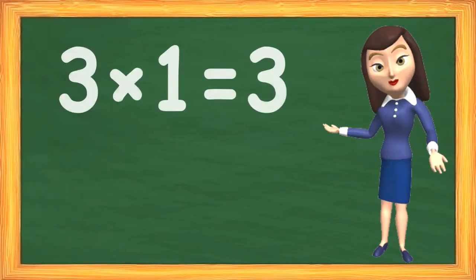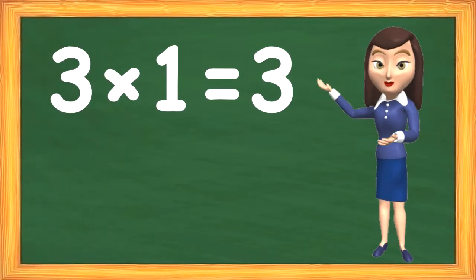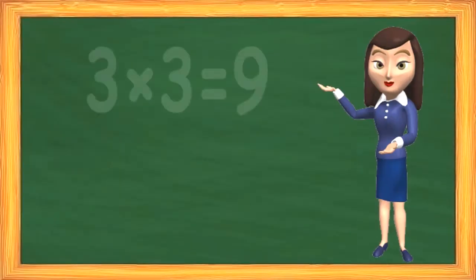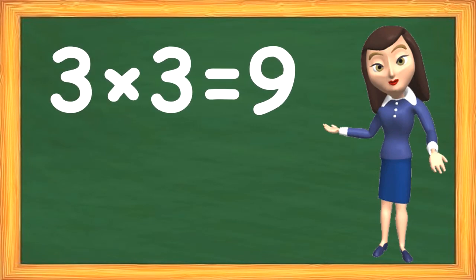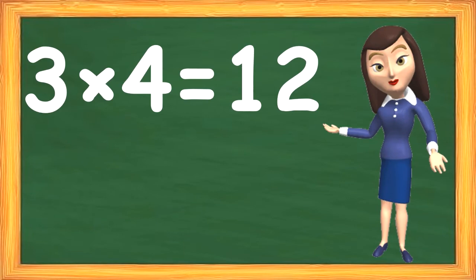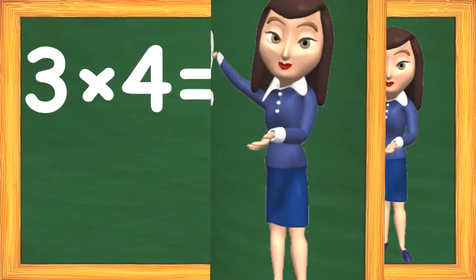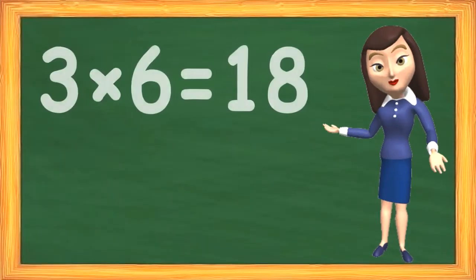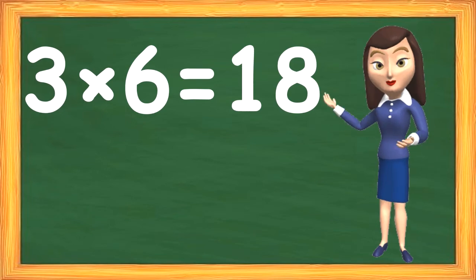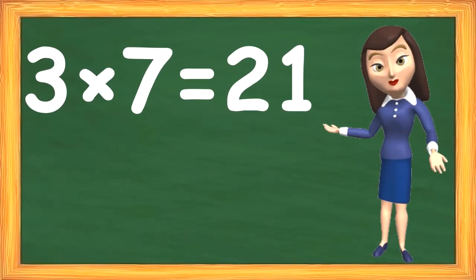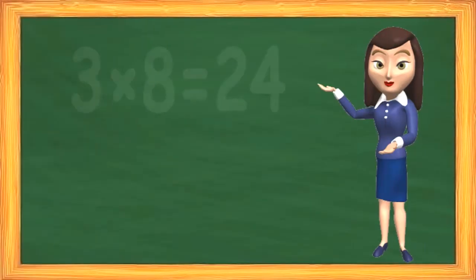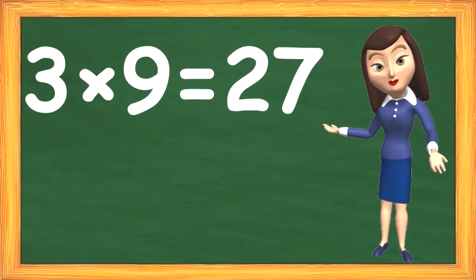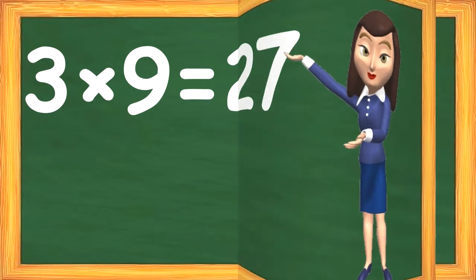3 1s are 3, 3 2s are 6, 3 3s are 9, 3 4s are 12, 3 5s are 15, 3 6s are 18, 3 7s are 21, 3 8s are 24, 3 9s are 27, 3 10s are 30.